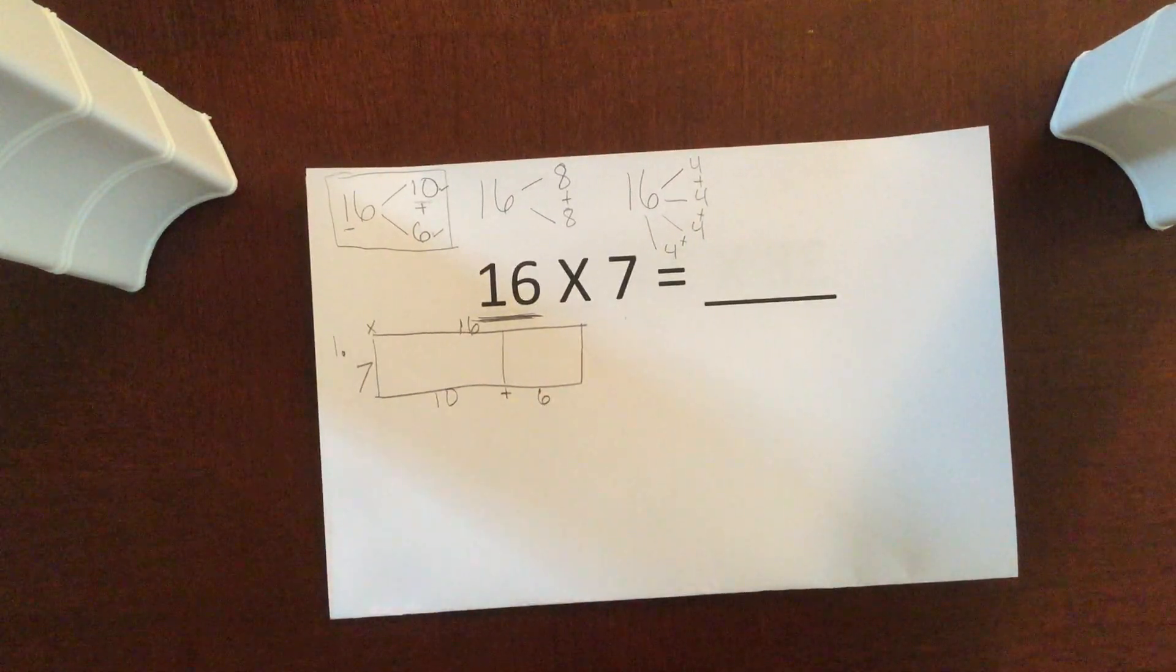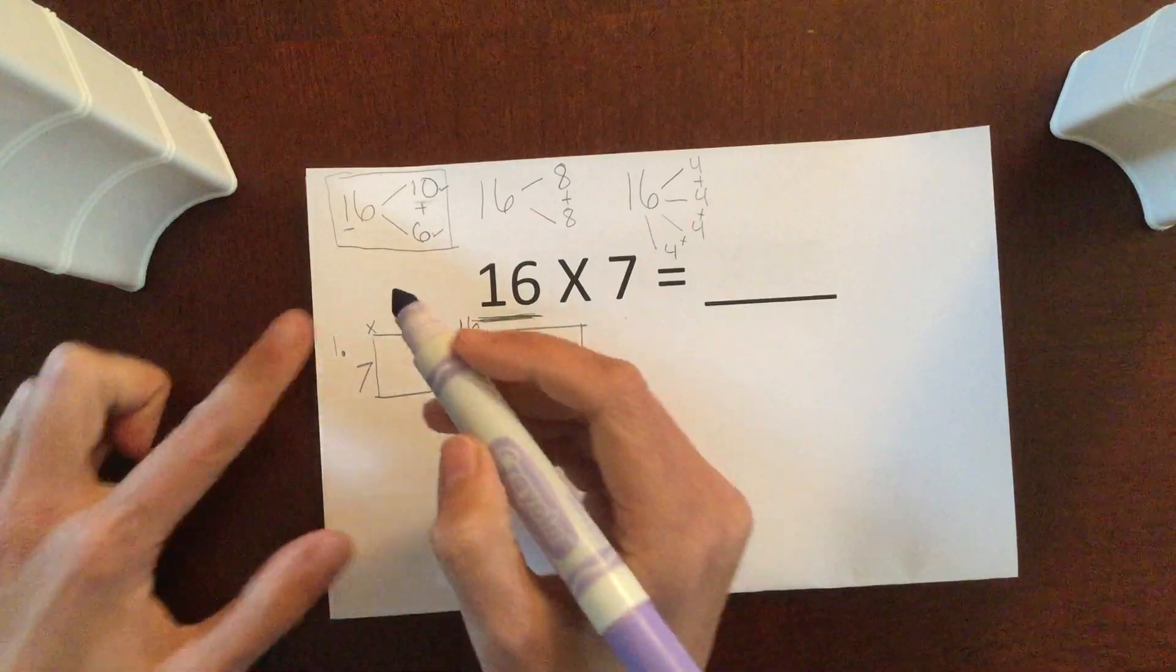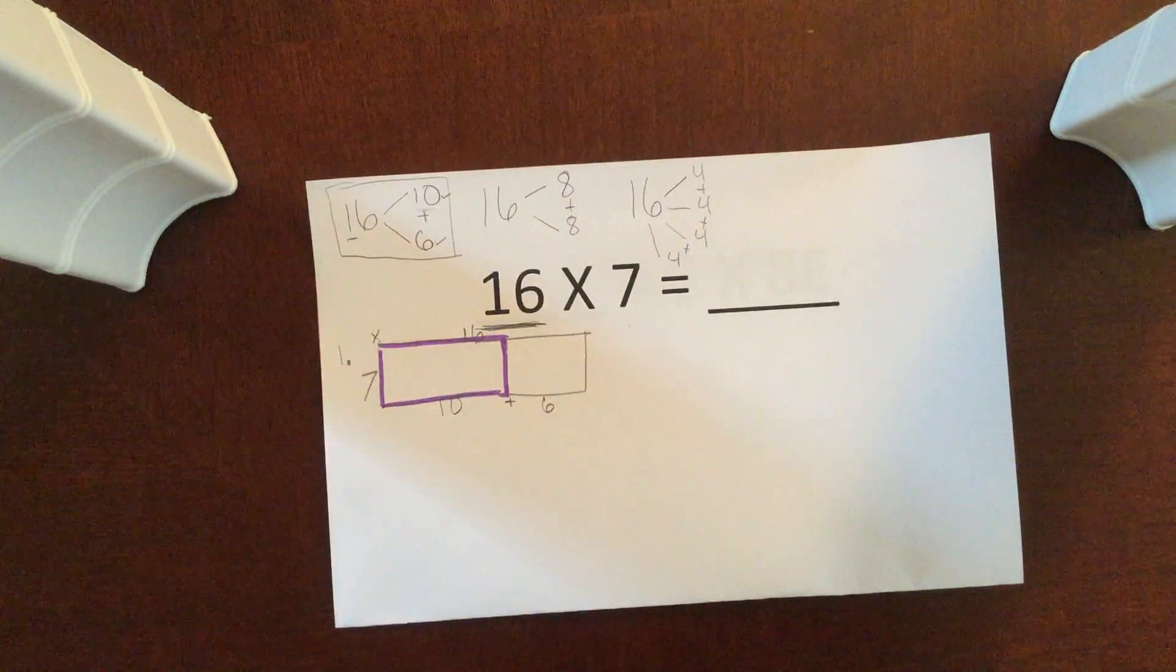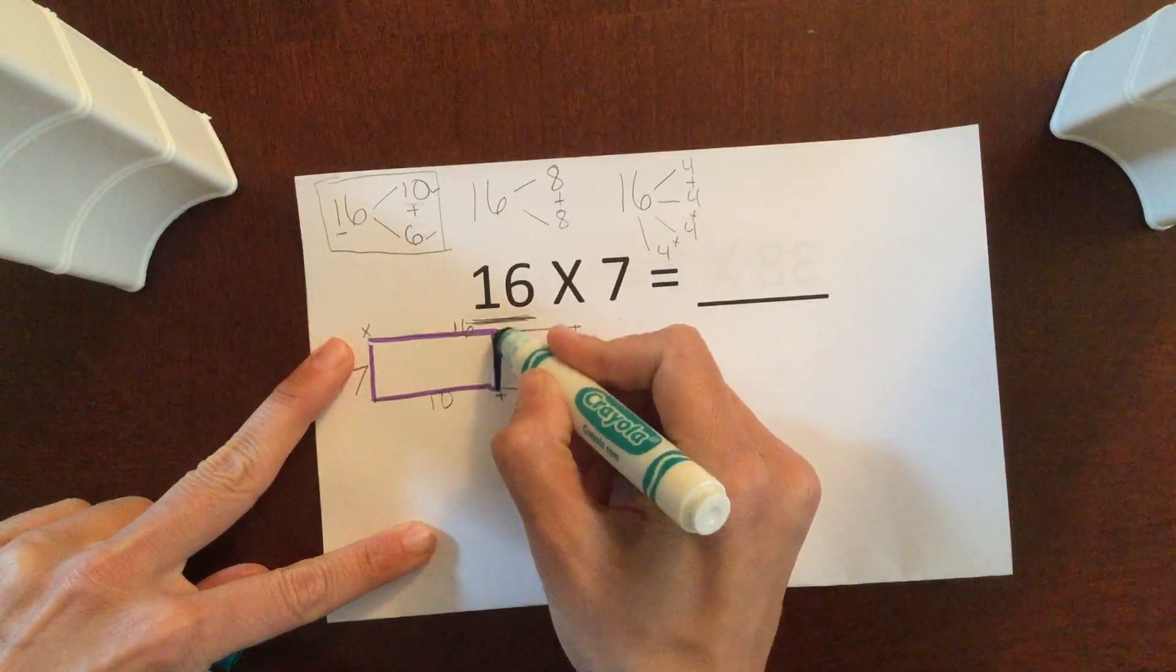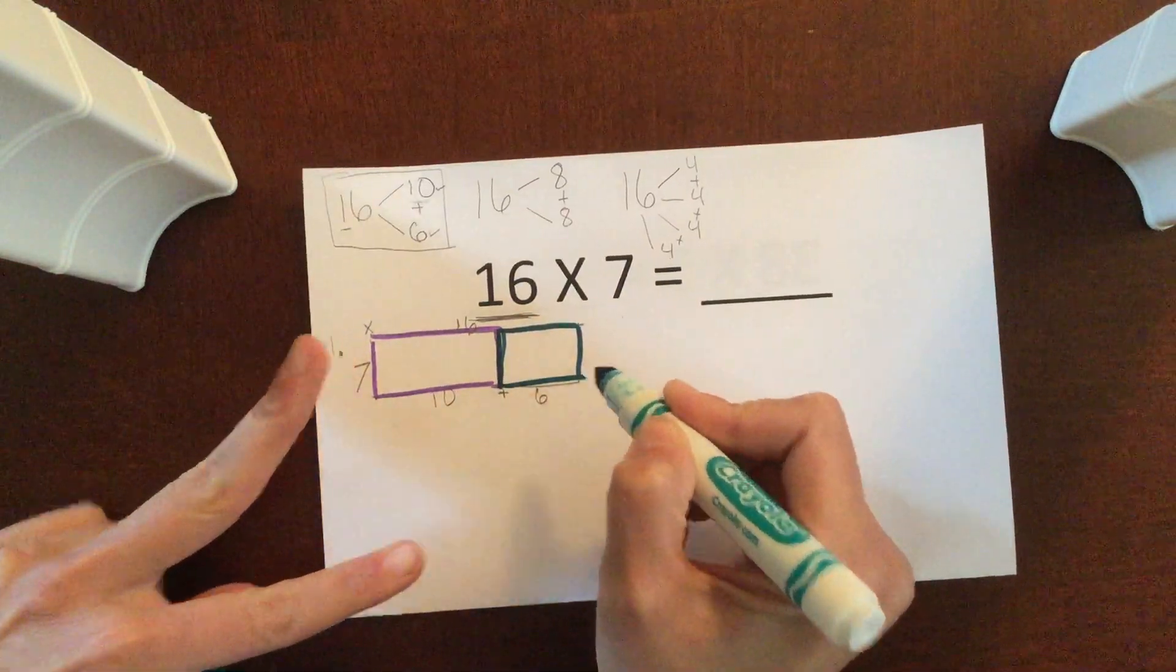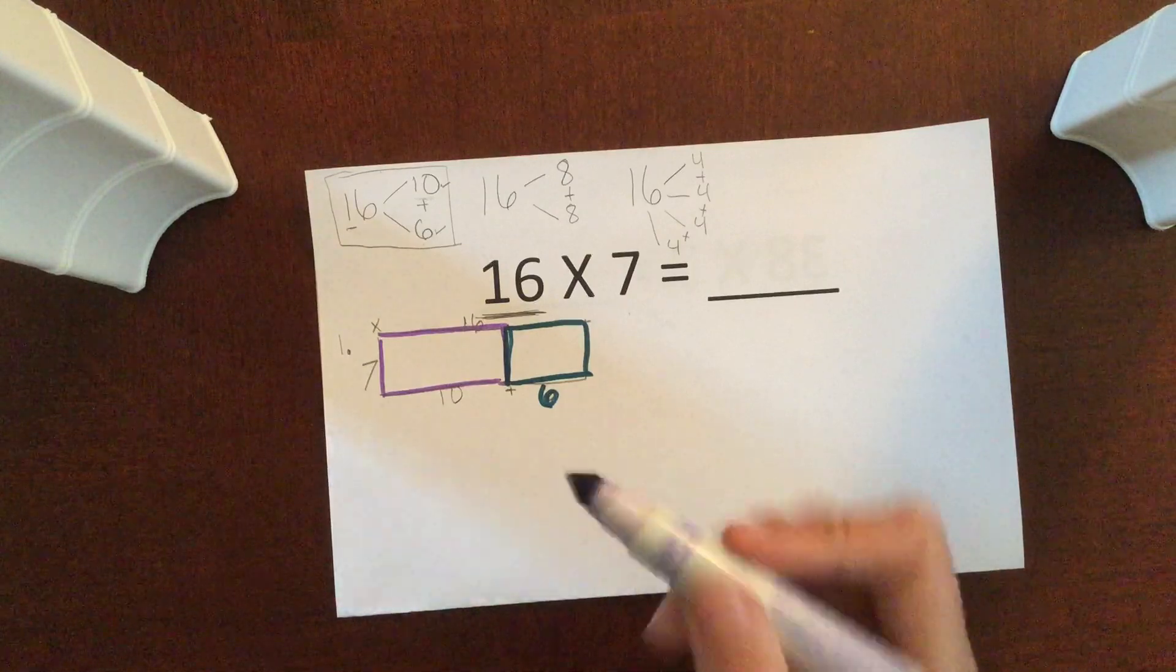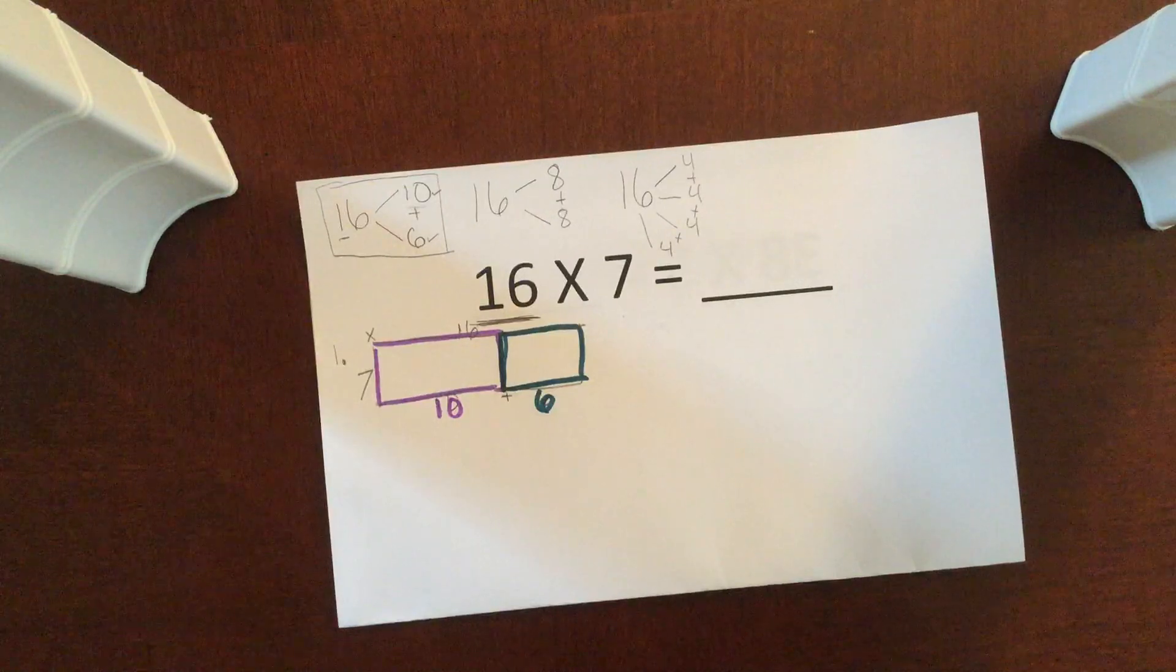So to really show the two different arrays, the two different pieces, I have this piece right here, and then I'm going to have this piece right here. So I have the 6 from the 16, and I have the 10 from the 16. And my 7 stayed the same.